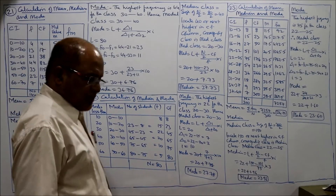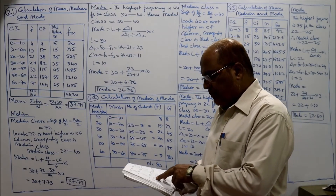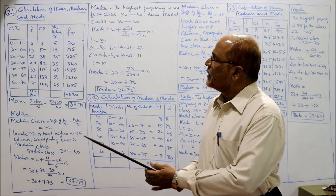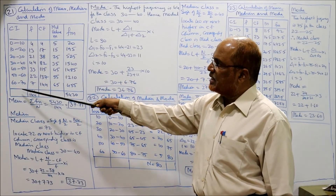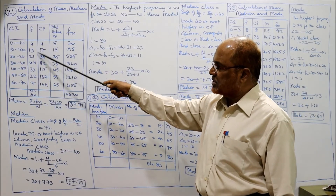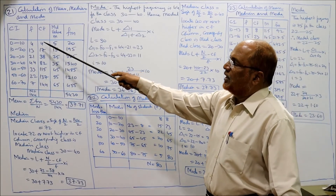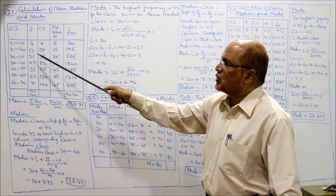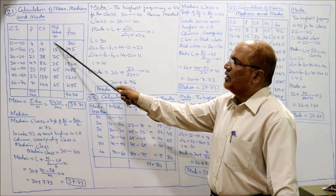Now we start problem number 21. Calculate mean, median and mode. Class intervals: 0–10, 10–20, 20–30. Frequencies are given; it's a continuous series. Frequency values: 4, 13, 21, ... total = 144. CF (cumulative frequency) for median: 4, 4+13=17, 17+11=28, 28+10=38, and so on. Mid values required for mean.